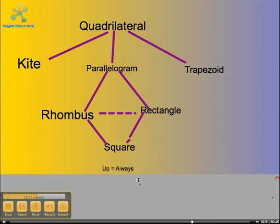On the flip side, down is sometimes. For instance, a quadrilateral is sometimes a trapezoid. A parallelogram is sometimes a rectangle. And a rhombus is sometimes a square.